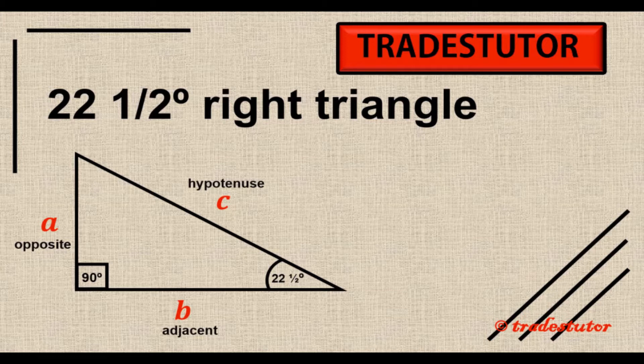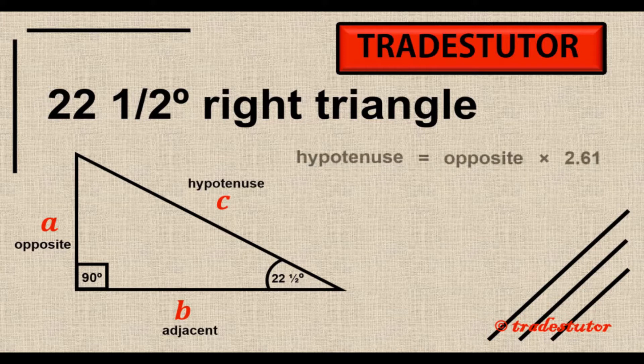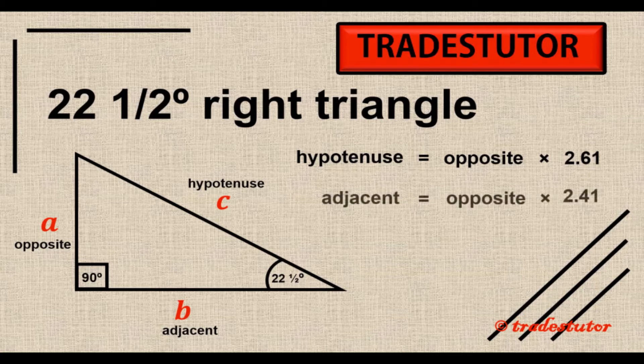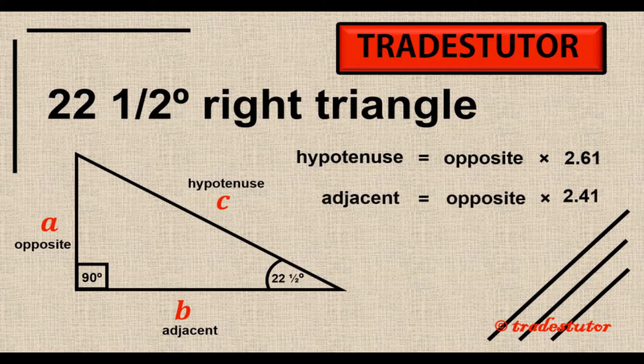There is a definite relationship between the three, and once again trigonometry will give us these numbers. But for the shortcut method, this one specific case, these are the numbers. So what we're saying is that the hypotenuse is 2.61 times bigger than the opposite, and the adjacent is 2.41 times bigger than the opposite. Once again, those numbers 2.61 and 2.41 come from trigonometry.